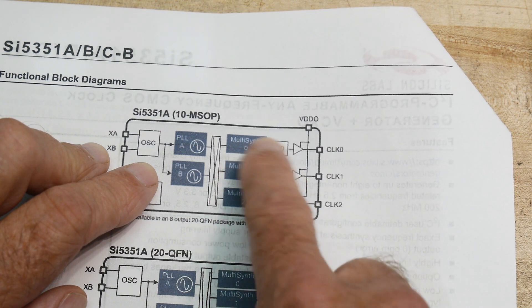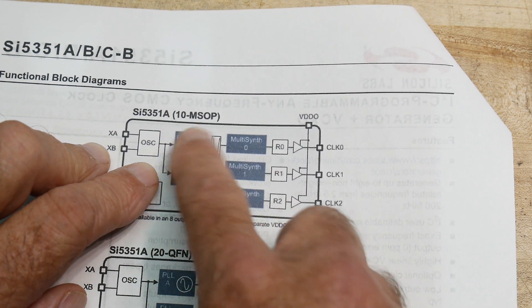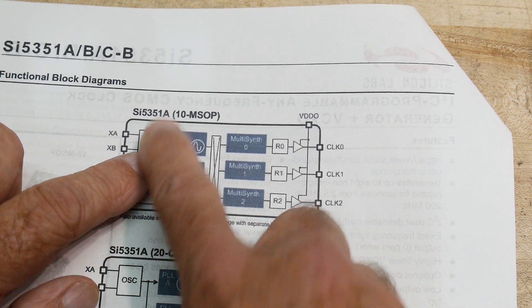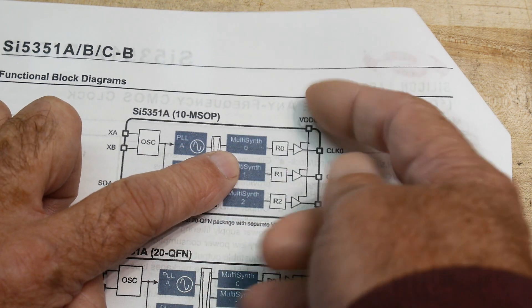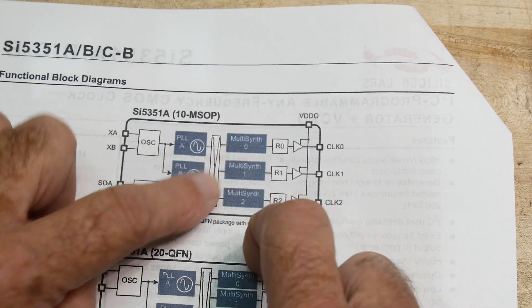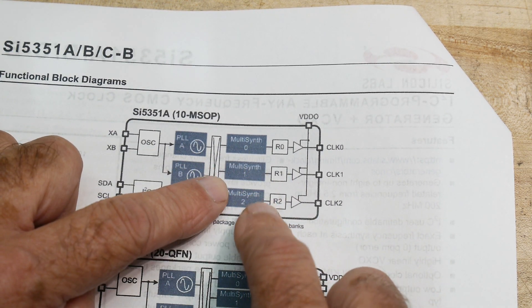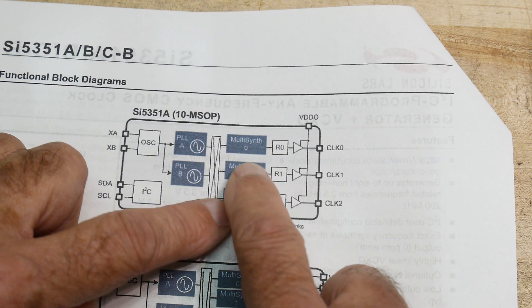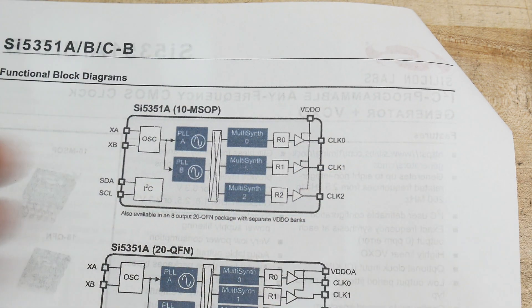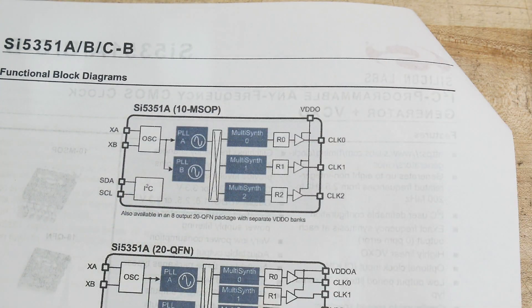And so whichever output you use, you can only use one of the PLLs, right? There's not a third PLL. So what's the second stage? The first stage takes your incoming frequency and boosts it up high. And then the second stage divides it back down low.